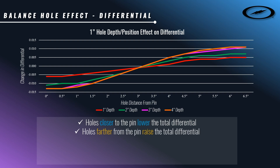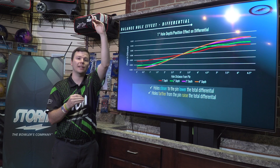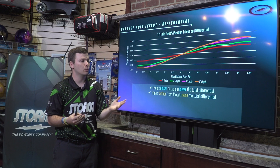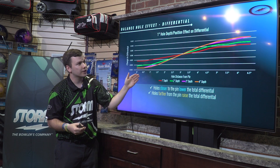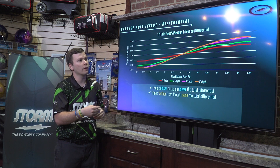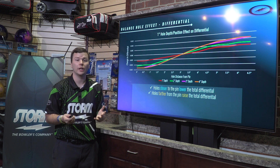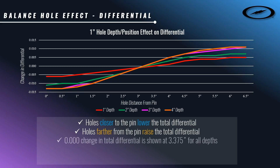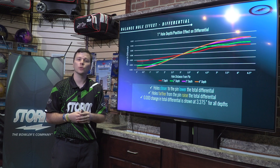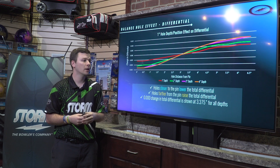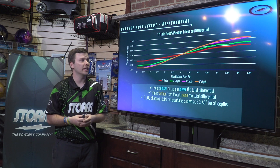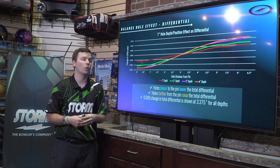If we go the other way and get further away from the pin, we're going to raise the total differential. Now we're close to the Y-axis — the highest — raising it even higher, creating a bigger difference between the two. You can see how this goes from low on the left to higher on the right as the hole distance from the pin changes. You'll also notice that all these lines cross each other near the middle of the graph.